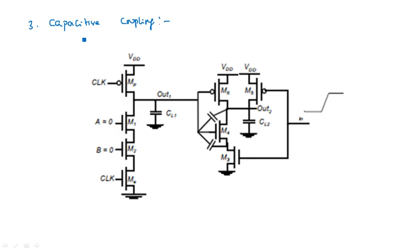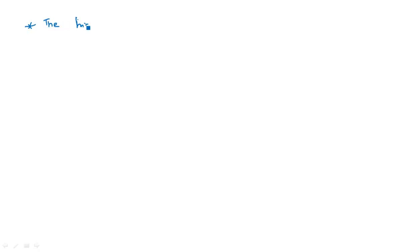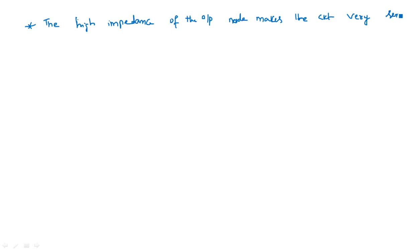In capacitive coupling, the output of the first dynamic CMOS stage is connected to a number of other stages. Because of the high input impedance of the following circuits, the output may degrade. To avoid this, capacitive coupling must be preferred — CL1 acts as a coupling capacitor providing high input impedance at the output and delivering power equally at frequency from the first stage to the second stage. The high impedance of the output node makes the circuit very sensitive to crosstalk effects.